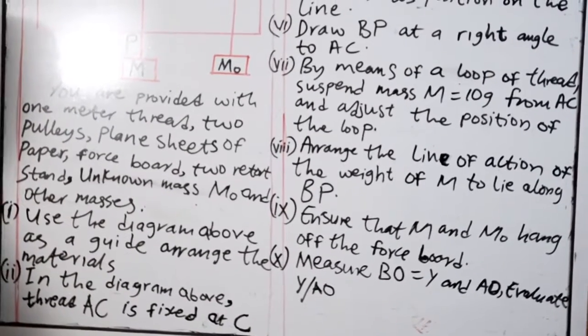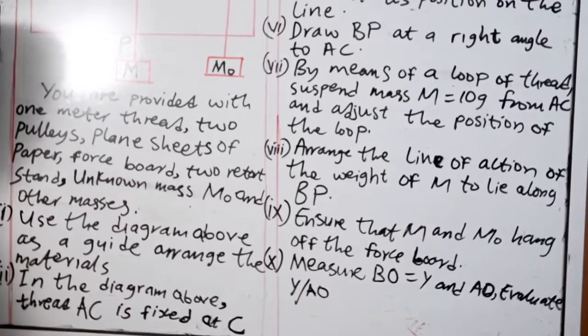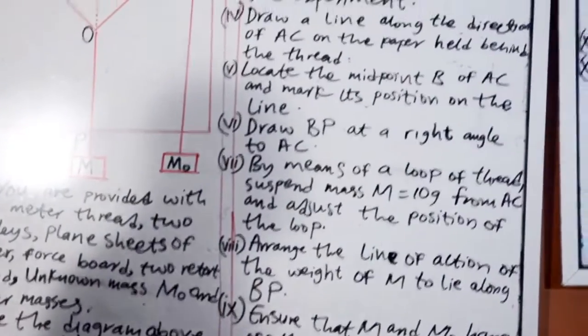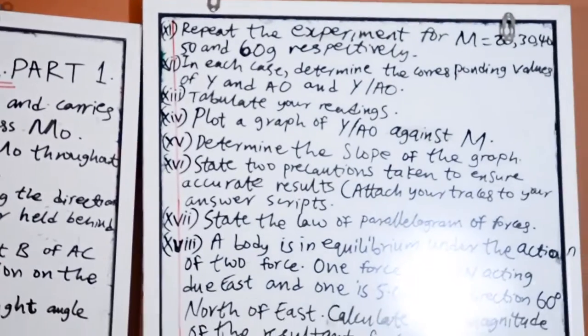Ten: Measure BO is equal to Y and AO. Evaluate Y over AO. Eleven: Repeat the experiment for M is equal to 20 grams.